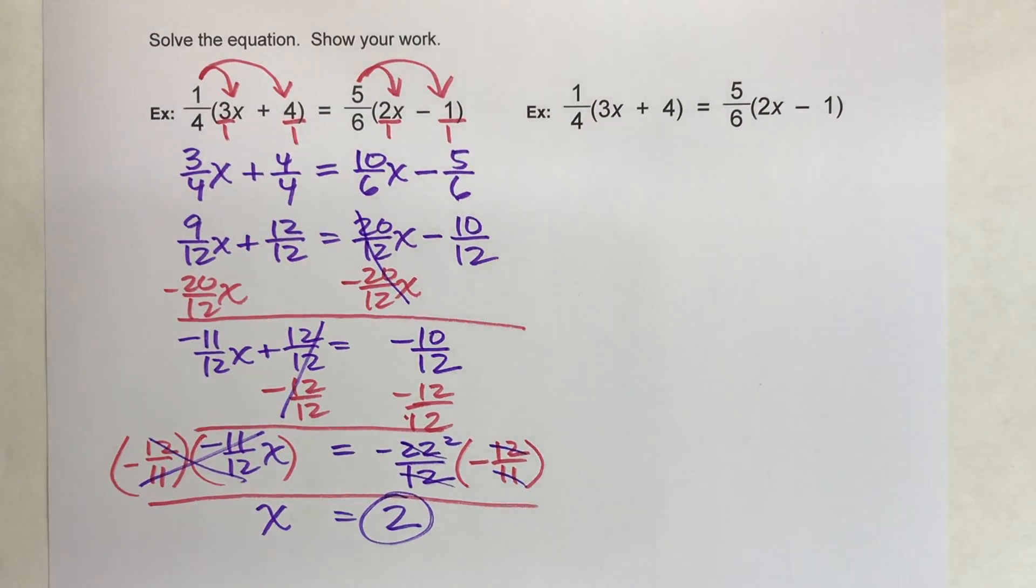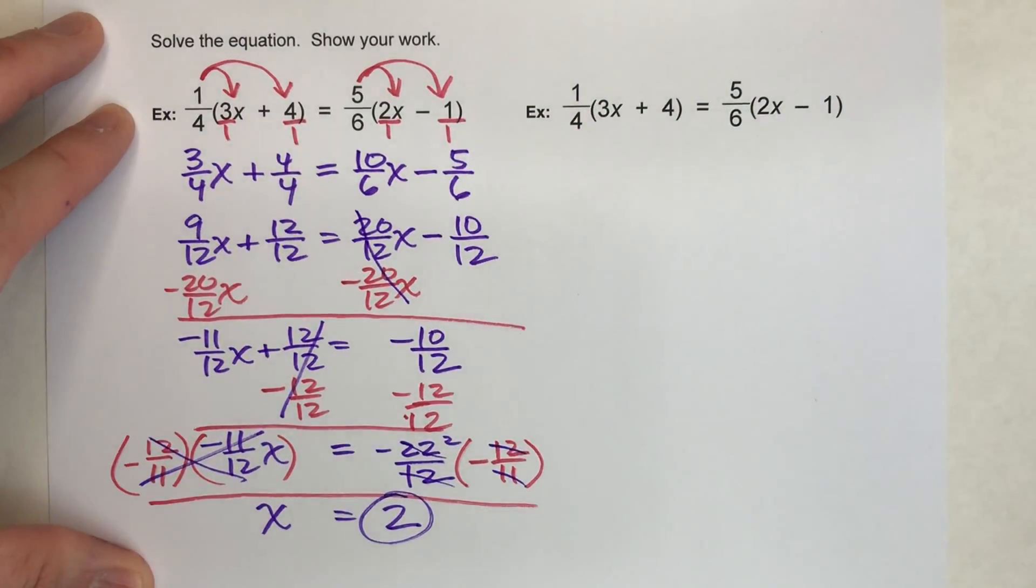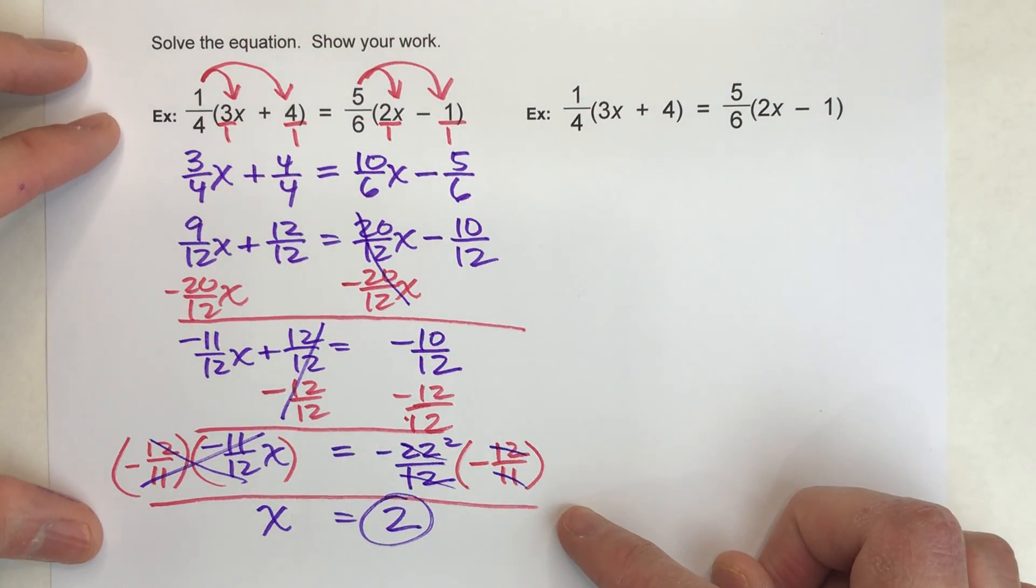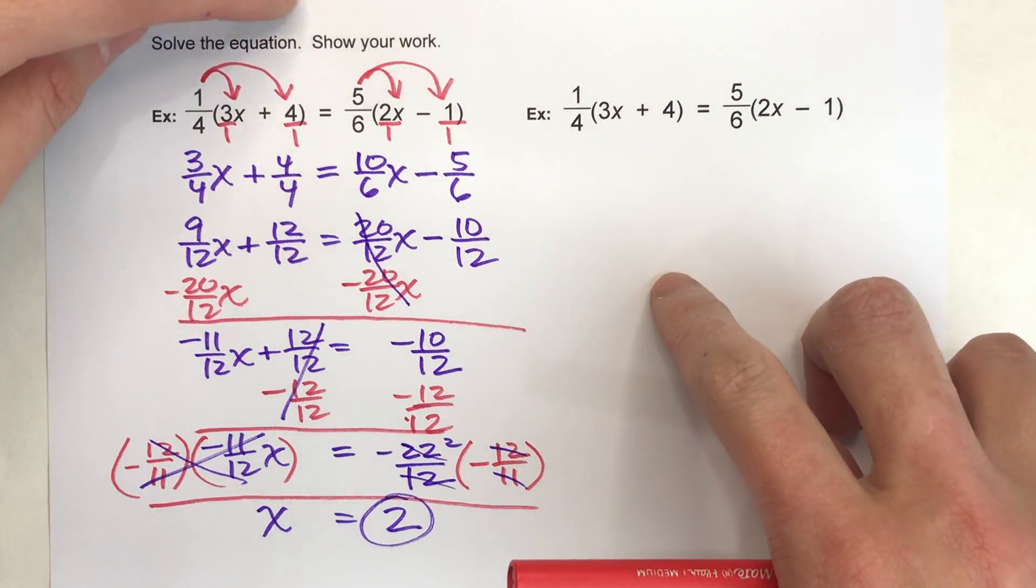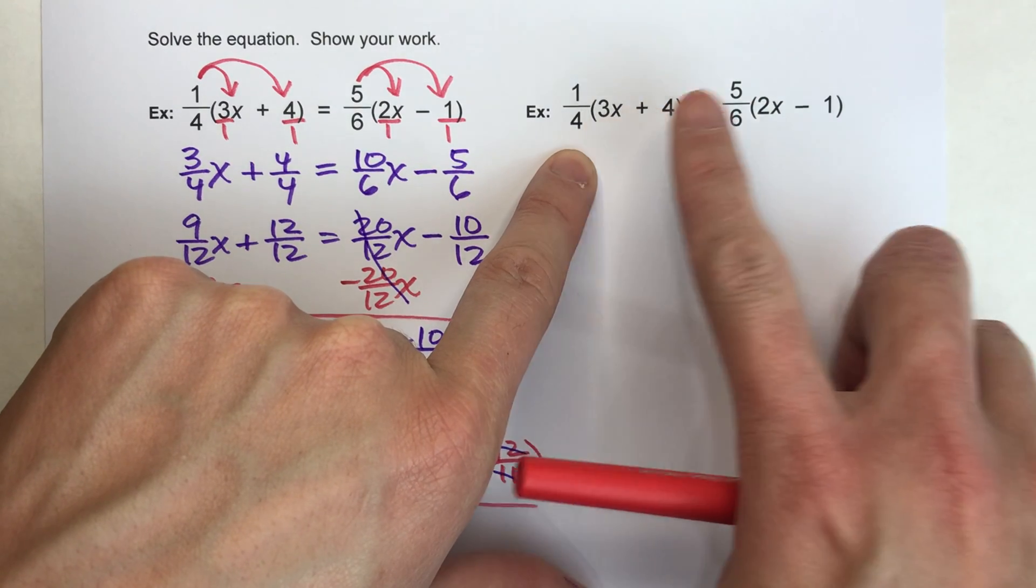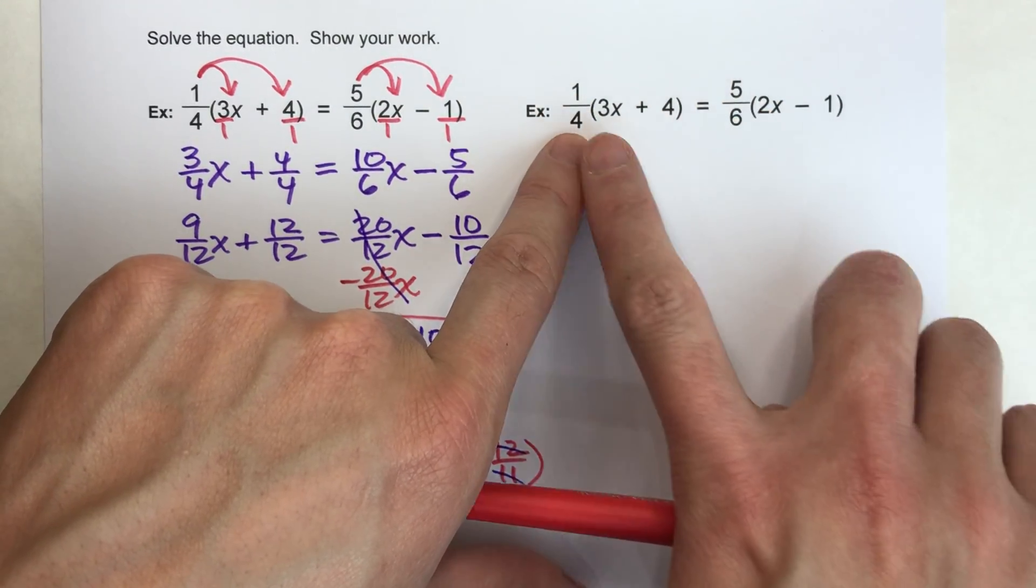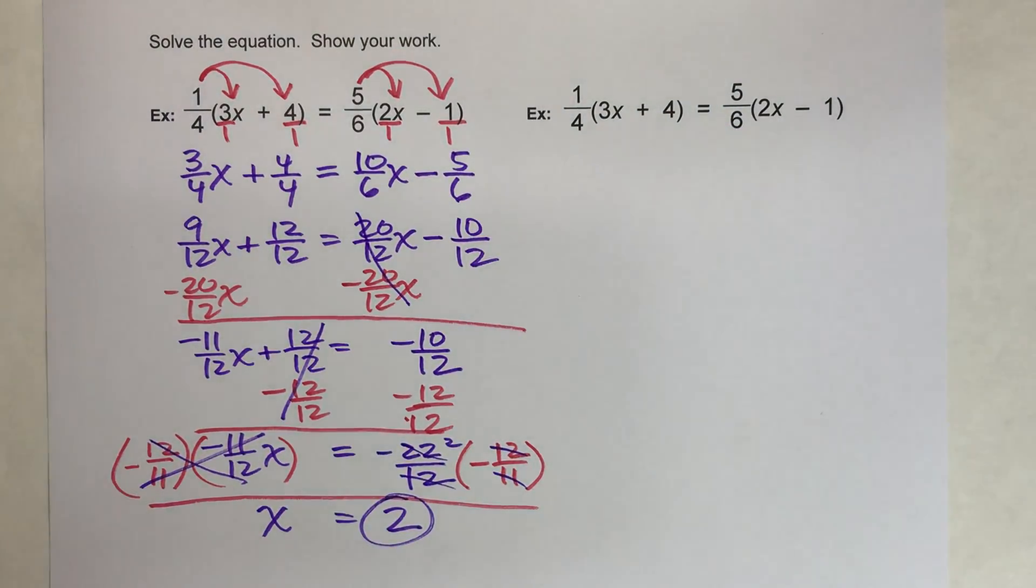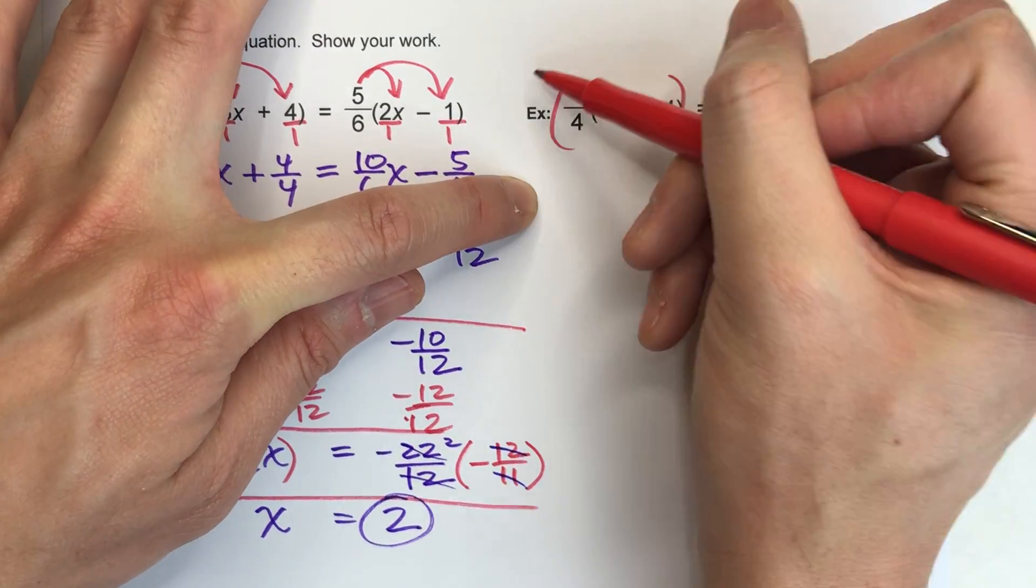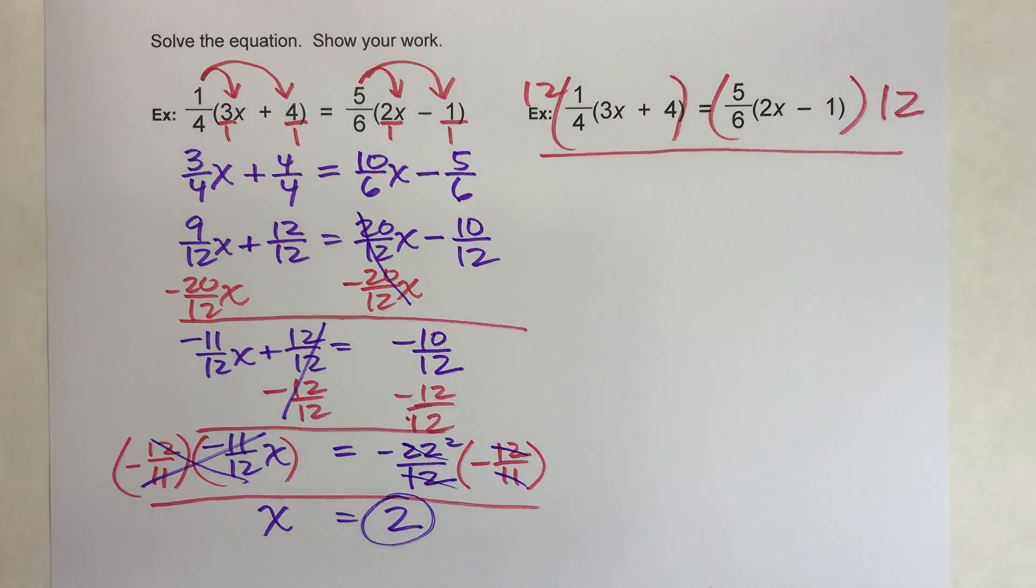Alright, now I'm going to show you a different method which will eliminate all the fractions on the very first step. And then you don't have to deal with fractions for the rest of the problem, which in this case would have saved us a lot of fraction work. Alright, so here's what we're going to do. On this second method, I'm going to multiply both sides by the common denominator of the fraction. So the fractions have 4 and 6 as your denominator, so my common denominator is going to be 12, which we already knew from the last problem. But what I'm going to do is I'm going to multiply both sides by 12. Alright, so when I do that, what happens?